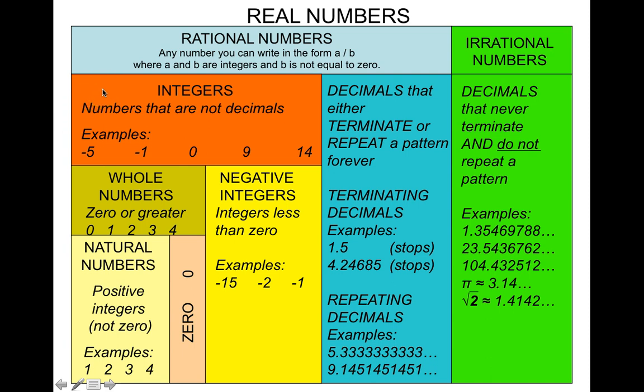Integers are numbers that are not decimals. For example, negative 5, negative 1, 0, 9, 14 — those are all examples of integers. There are no decimals or fractions here.